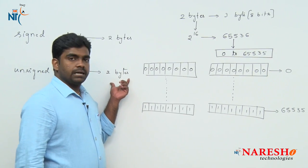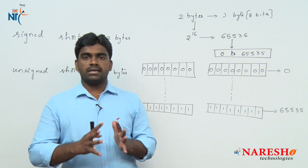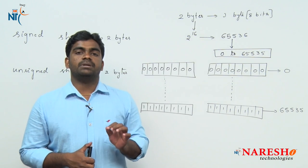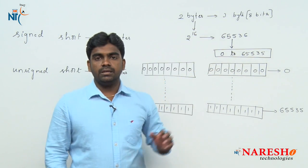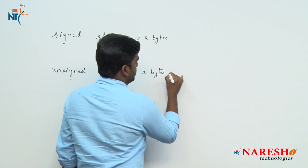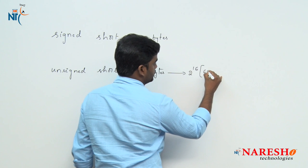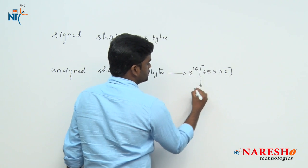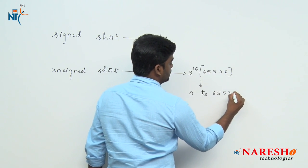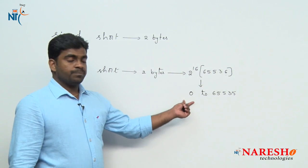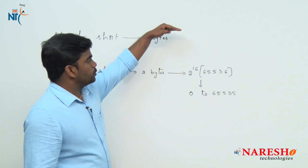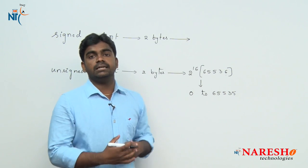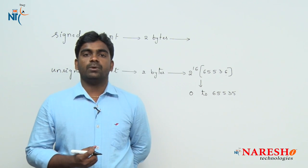For unsigned data type, it always stores a positive value. The range of unsigned data type is 0 to 65535, using 2 bytes. 2 power 16 equals 65536, and the range is 0 to 65535 — this is the minimum and maximum value. Now for signed data type using 2 bytes, what is the minimum and maximum value?